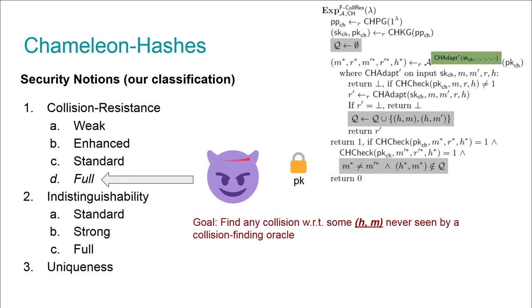What we really want is a combination of both, and this is exactly what full collision resistance achieves. Again, we have a collision-finding oracle, but now that oracle logs pairs of hash-message pairs queried to the adapting oracle, and the adversary wins if it can come up with a tuple never seen. This means malleability for the hash and message are ruled out simultaneously. That's it for the collision resistance notions.